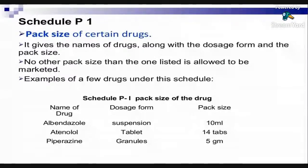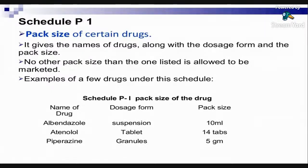The Schedule P1 table has three columns: name of drug, dosage form, and pack size. Albendazole is available as a suspension with a pack size of 10 ml. Atenolol is available as a tablet with a pack size of 14 tablets per strip. Piperazine is available as granules with a pack size of 5 grams.